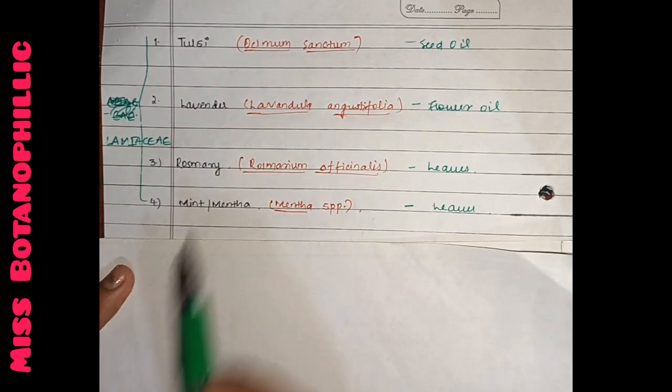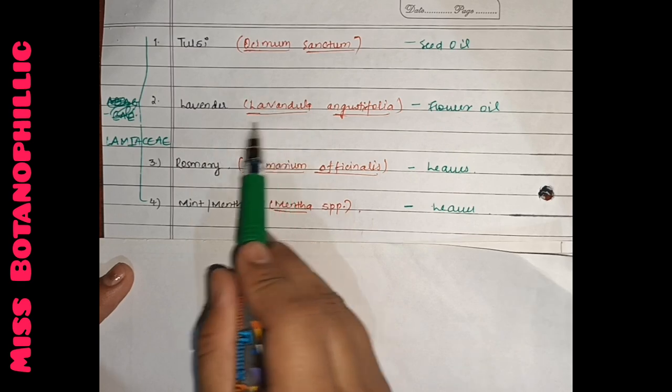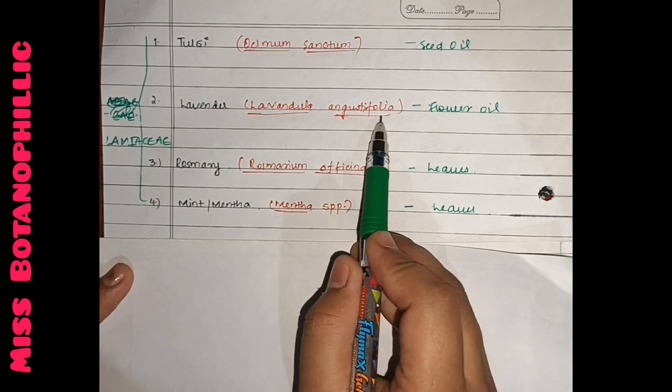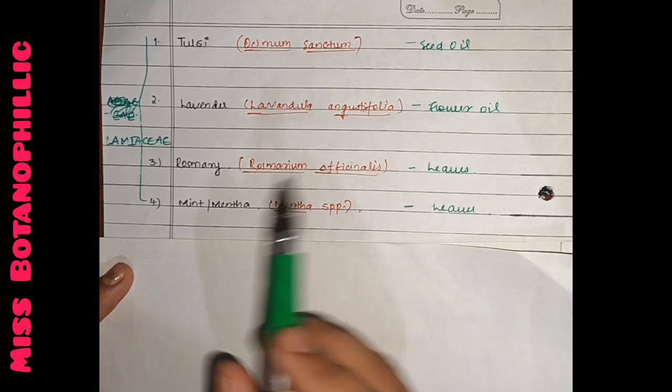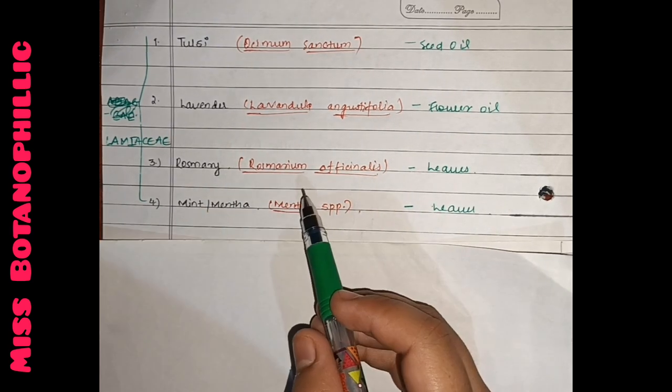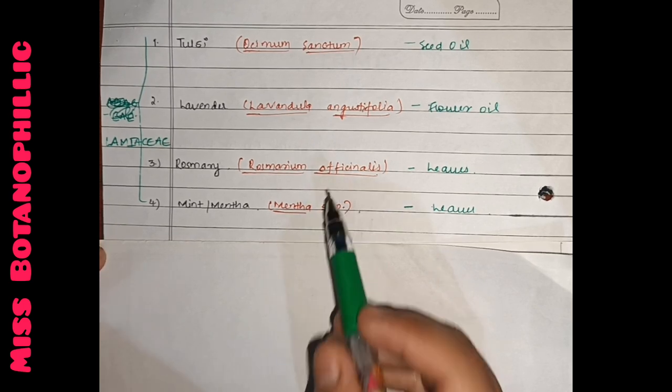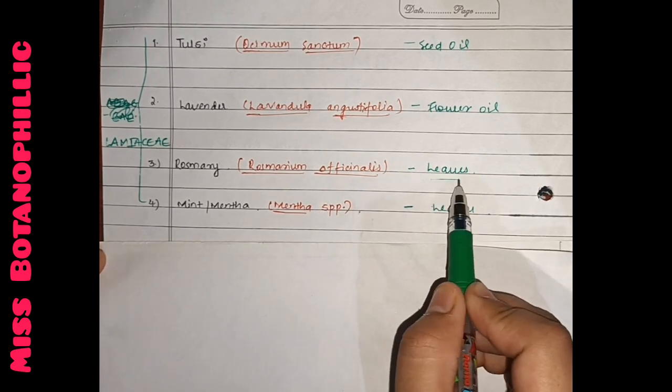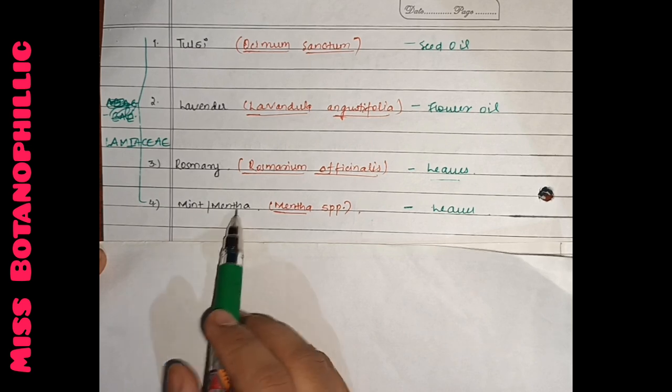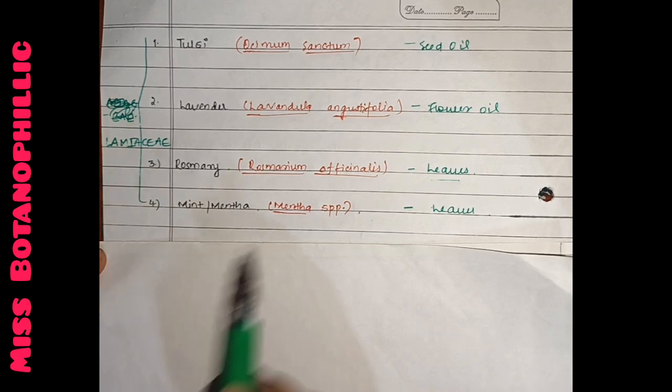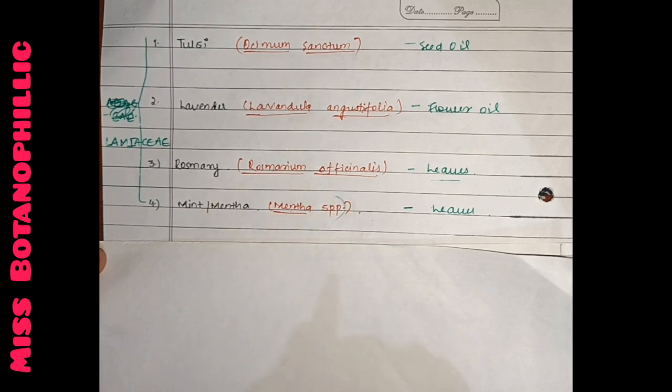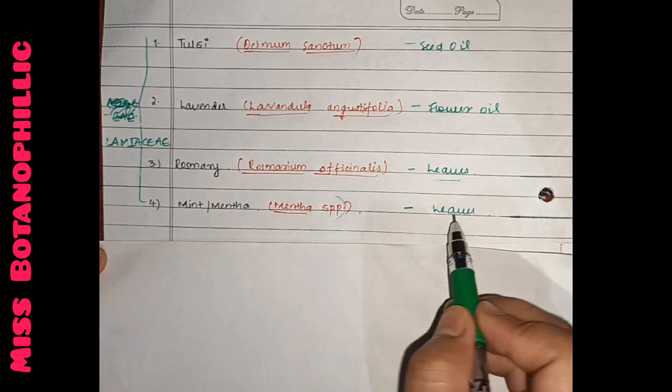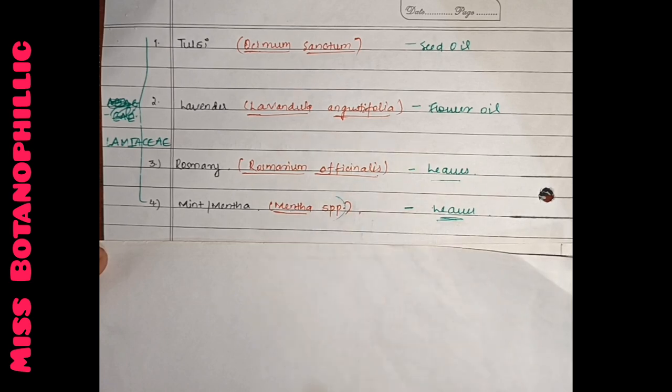Then we have lavender - Lavandula angustifolia. This is the flower where aroma extracts from. Then we have rosemary - Rosmarinus officinalis. It is used in leaves. On fourth, we have mint or mentha, which we call podina. The botanical name is mentha. It has many species. It is used in leaves and is called a characteristic aromatic plant.